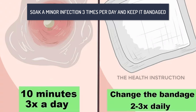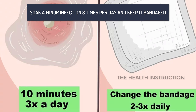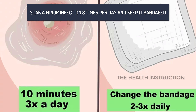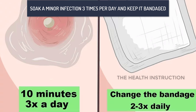Soak a minor infection three times per day and keep it bandaged. Minor abscesses and skin infections often go away on their own with proper home care. Wash the infected area thoroughly, soak it in warm water for 10 minutes three times a day, and cover it with a sterile bandage. Change the bandage two to three times daily or whenever it gets wet.